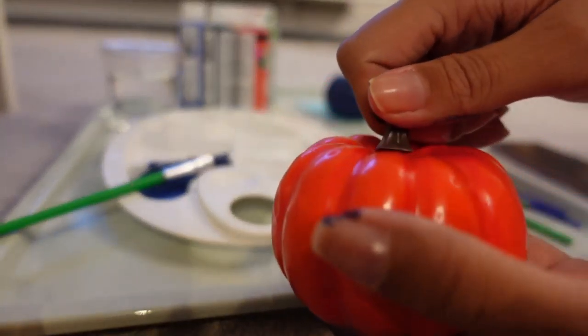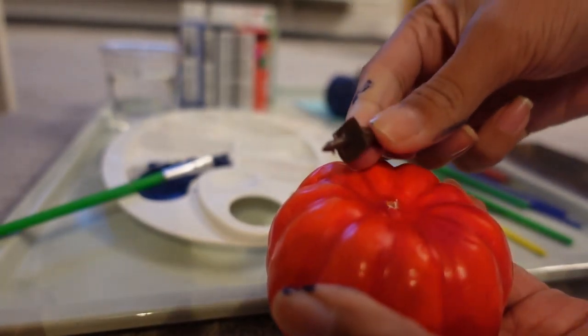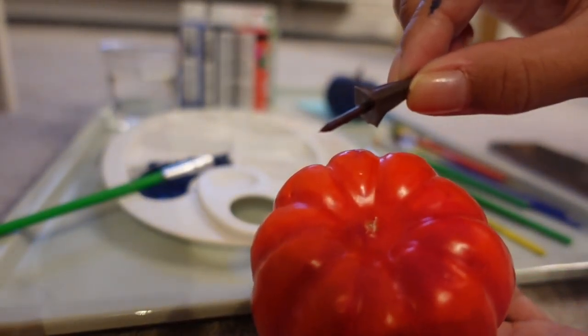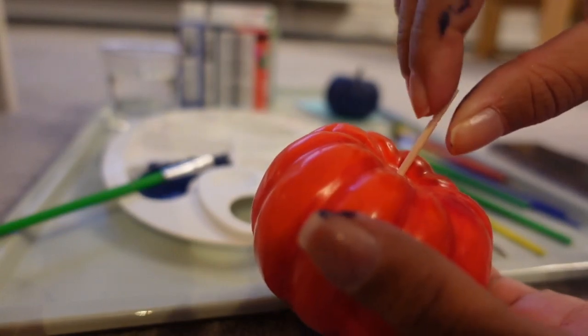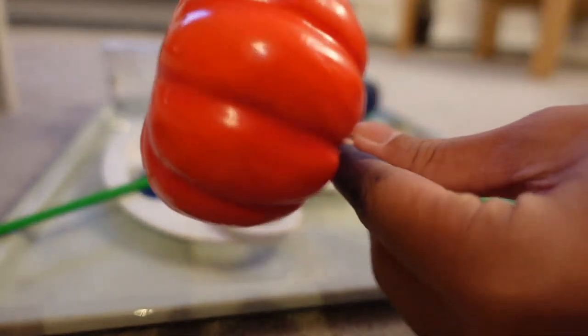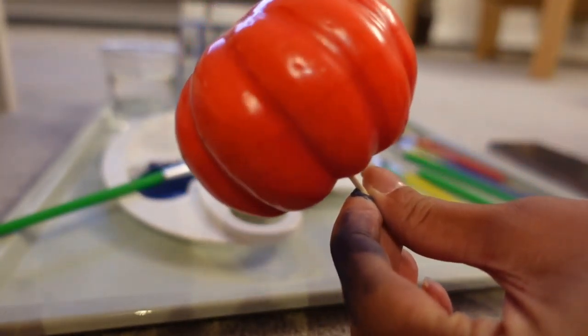While doing this I figured out a hack because my fingers were actually cramping from holding that stem while painting. So I actually just popped the stem off and put a toothpick in there and that was much easier to hold.